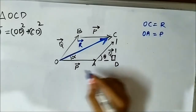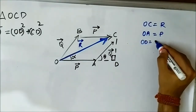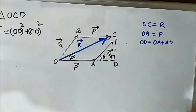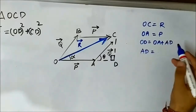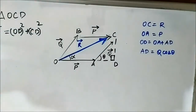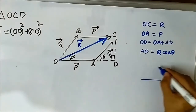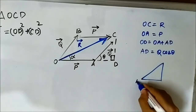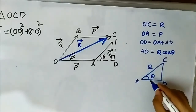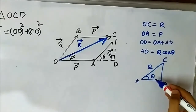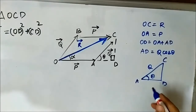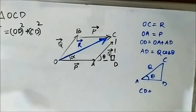OD is equal to OA plus AD. In triangle ACD, the angle is theta and AC is Q, so AD will be Q cos θ — since cos θ equals base over hypotenuse, which is AD over AC (which is Q). Therefore AD equals Q cos θ, and similarly CD equals Q sin θ.